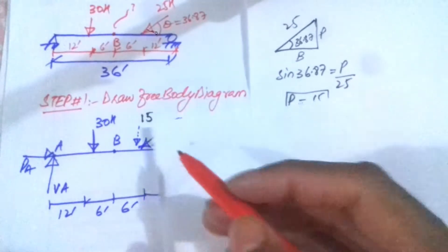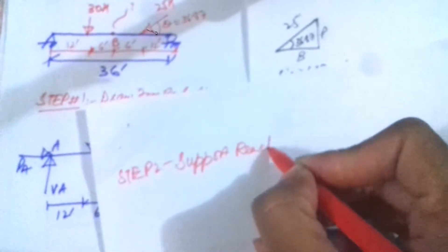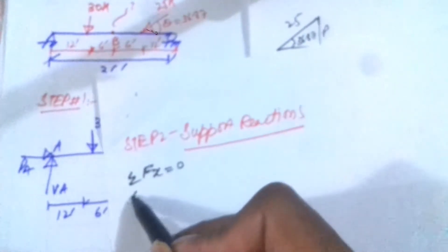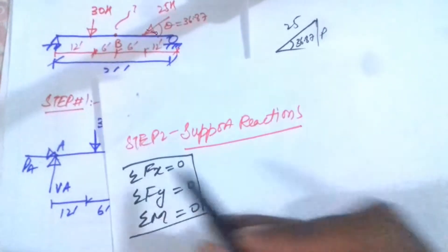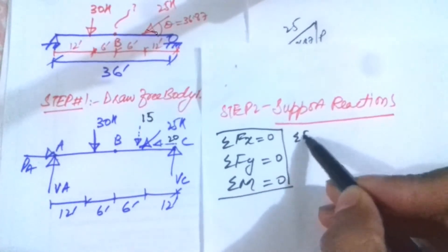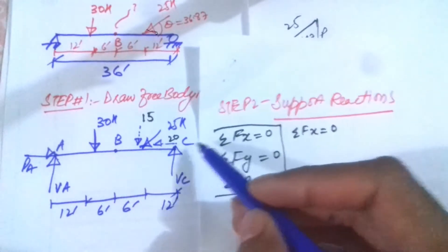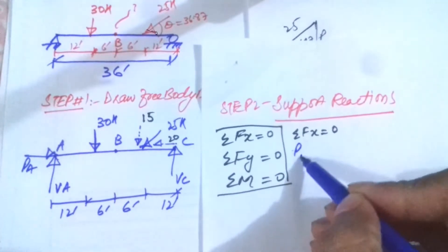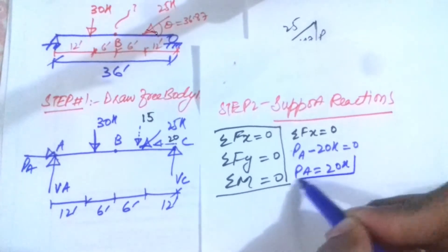The next step is calculating the support reactions using the equations of equilibrium: summation of x equals zero, summation of y equals zero, and summation of moments equals zero. For summation of x equals zero, taking rightward force as positive and leftward as negative: PA minus 20k equals zero, so the horizontal reaction at point A is 20 kips.